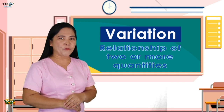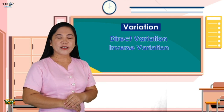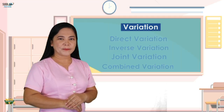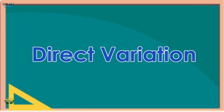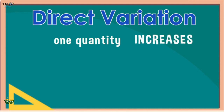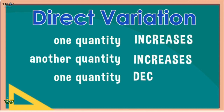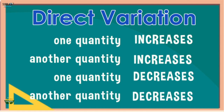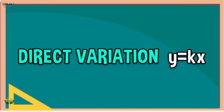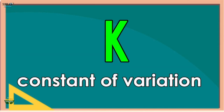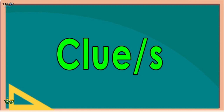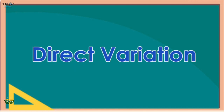The relationship of two or more quantities in math can also be called variation. Variations can be classified into four types: direct, inverse, joint, and combined variation. A variation is considered a direct variation when one quantity increases as another quantity increases, or conversely, one quantity decreases as another quantity decreases.